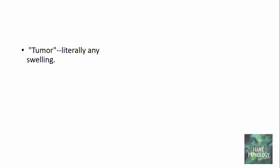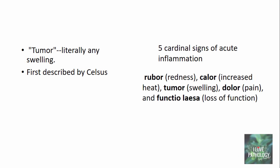Tumor literally means any swelling. This was first described by Celsus. If you remember inflammation, you know that there are five cardinal signs of acute inflammation: rubor, which means redness; calor, which means increased heat; tumor, which means swelling; dolor, which means pain; and the last one is functio laesa, which means loss of function.